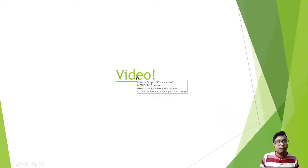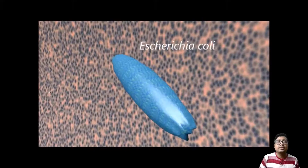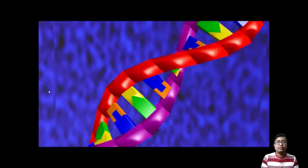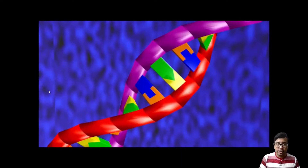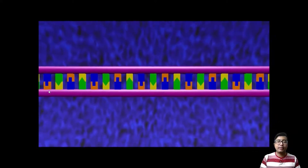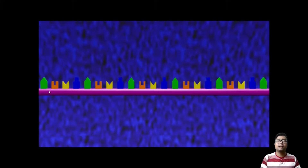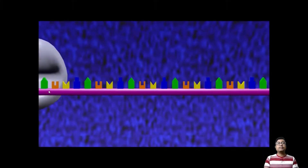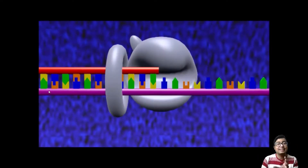Now let us look at the 3D video, which will be easier to understand. This is an E. coli, because we are describing the prokaryotic system, and inside the E. coli, this is a DNA. Bases are matched — adenine to thymine and cytosine to guanine: A, T, G and C. This matching is taken care of during replication. DNA polymerase — DNA polymerase 3 to be precise — scans the parent strand and forms an exact complementary copy in the daughter strand.